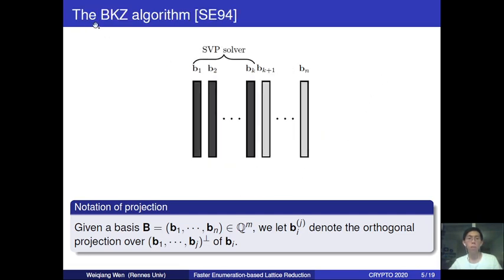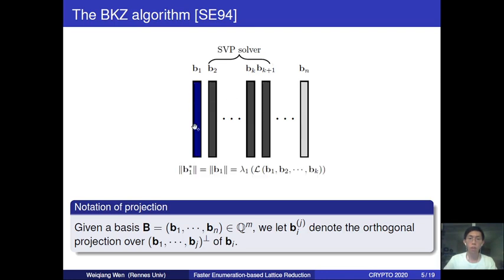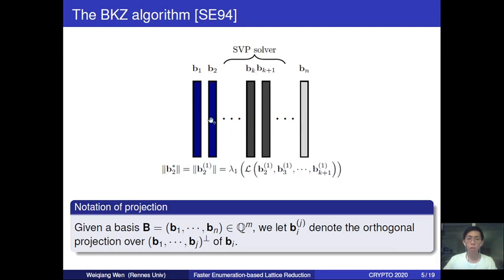The BKZ algorithm takes as input a basis B = (B1, ..., Bn) and also a block parameter K denoting how strong the lattice reduction is going to be. BKZ starts by running an SVP over the first block from B1 to BK, then uses the found shortest vector in the first block to update the first basis vector, and then moves to the second block, where again it uses the found shortest vector to update the second basis vector, and so on.